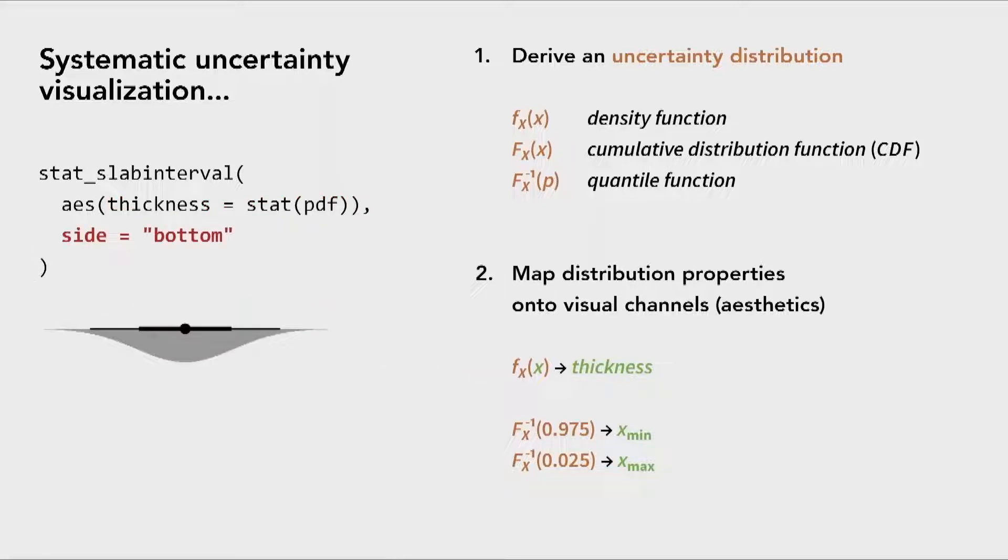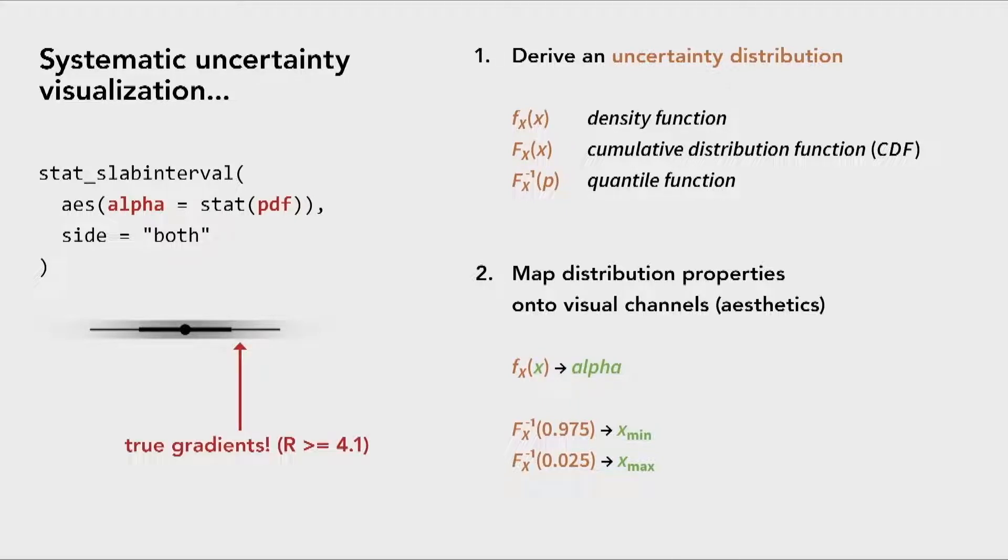You can then play around with different properties, like maybe the orientation of this slab relative to the interval. You might decide that you want the CDF instead of the PDF. You might decide that you want a gradient plot, so you map the density onto the alpha instead of onto the thickness of the slab. In fact, as of R 4.1, ggdist supports the true gradients that have been added to the graphics engine. So if you output this to, say, an SVG or a PDF, you can zoom all the way in, and you'll get high-quality gradients no matter how far you zoom in.